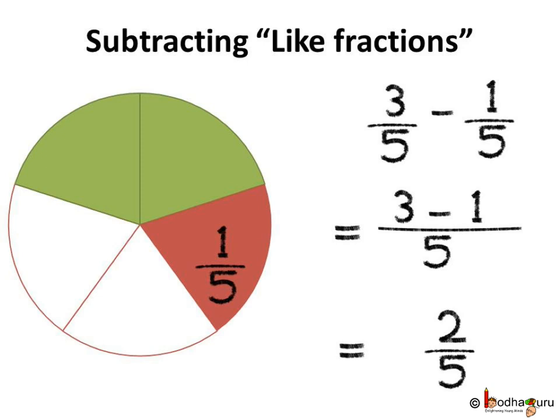So, after giving one-fifth to his friend, three by five minus one by five will be three minus one, which is two, and the denominator remains the same, which is five. So, two by five is the answer.